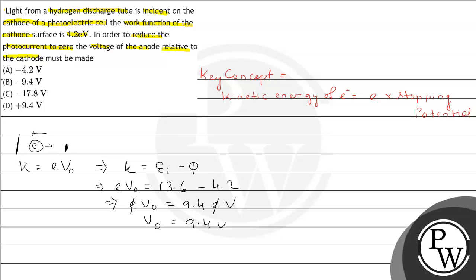But because it is a stopping potential, the potential is applied across the anode side, so it is always negative. The answer should be minus 9.4 V. So your final answer is phi-naught equals minus 9.4 V, because stopping potential is always negative. If you see the options, that will be the correct answer.